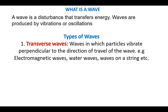Let's look at the types of waves. We have what are called transverse waves. Transverse waves are simply waves in which particles vibrate perpendicular to the direction of travel of the wave. Examples are electromagnetic waves, water waves, and waves on a string.